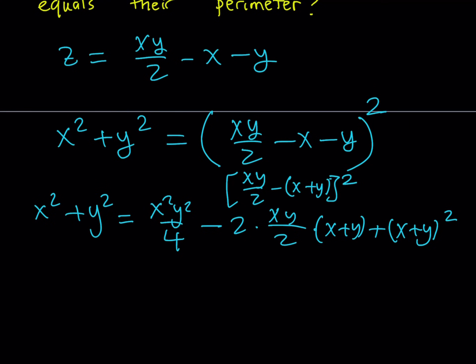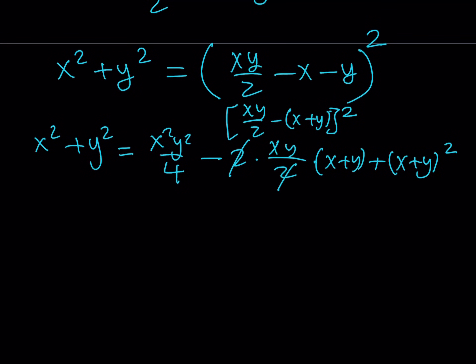Now notice that I have x squared plus y squared on the left hand side, and the quantity x plus y squared on the right hand side - obviously, certain terms are going to cancel out. Of course, the two is going to cancel out as well, leaving us with a four. But we're going to multiply everything by four once we simplify this a little bit more. So let's go ahead and do that first, and then we'll multiply by four. So x squared plus y squared is equal to x squared y squared over four minus xy times the quantity x plus y. And then I'm going to expand the square: x squared plus y squared plus two xy.